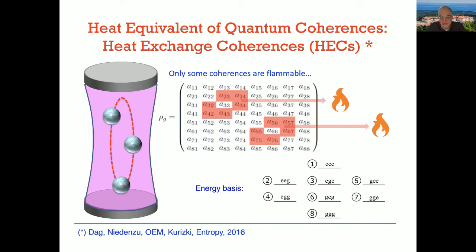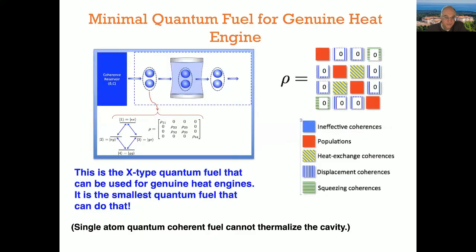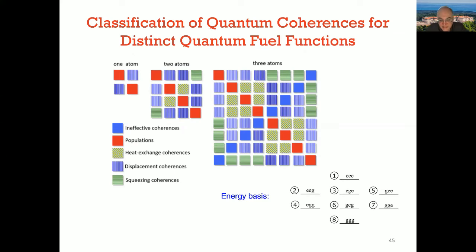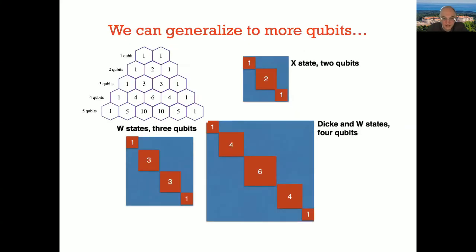Without going into much detail: if you are close to the main diagonal of the density matrix in the energy basis and these coherences are present, these states will have effective temperatures and produce heat flows. We propose the minimal quantum field to operate these thermal or information devices. The key point is that all functional classifications of states are distinct — a state belonging to the heat-like category cannot belong to the work-like category. There is a functional, thermodynamic separation of quantum states with a group-theoretical structure.